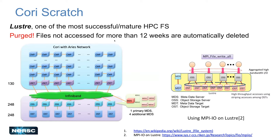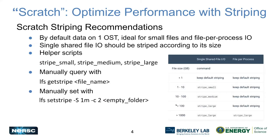Scratch is basically an IO network which connects lots of storage servers. You can use various tools in Lustre to write files striped across multiple of these servers. That's where a lot of the bandwidth performance comes from — spreading things across servers. One key thing is to control the striping.